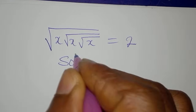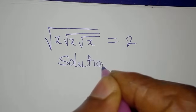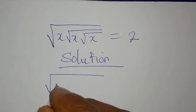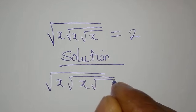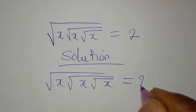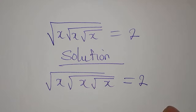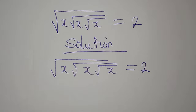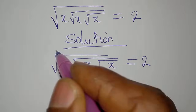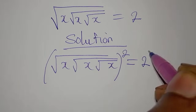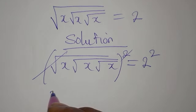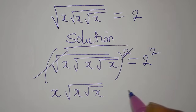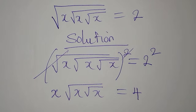Let's work on this sodic equation: the square root of x, the square root of the square root of x, and the square root of that equals 2. I call this a sodic equation because of the roots. Let's use this method — we'll square both sides to remove the outer root, giving us x times the square root of x times the square root of x equal to 4.